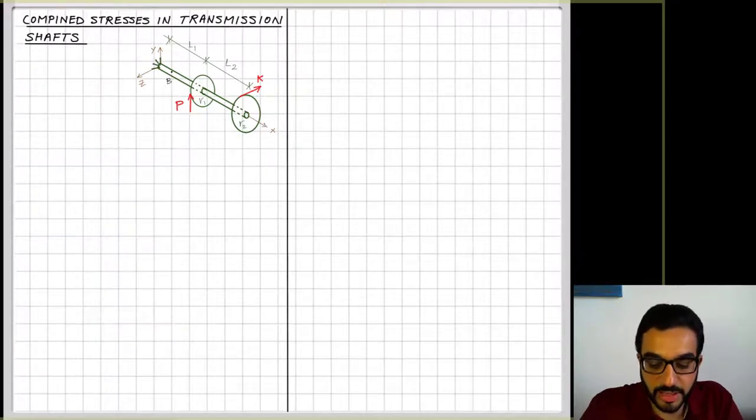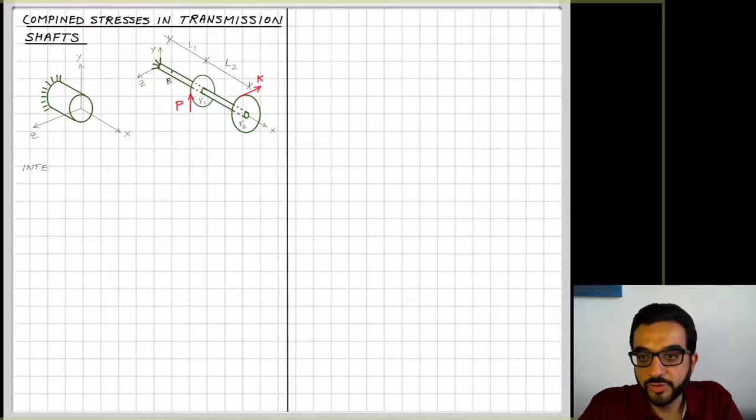So if I take a section at point B and show here my axes, and I want to figure out the internal forces at the cut at point B.